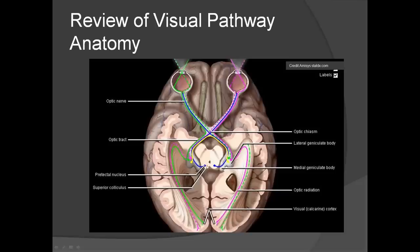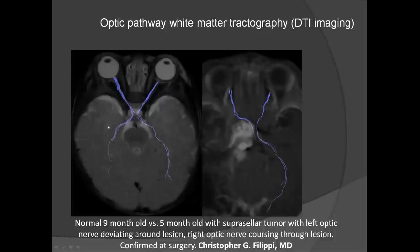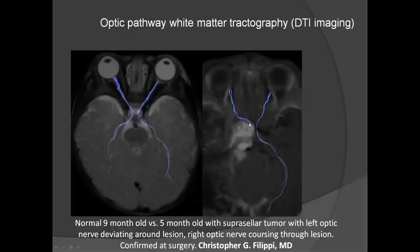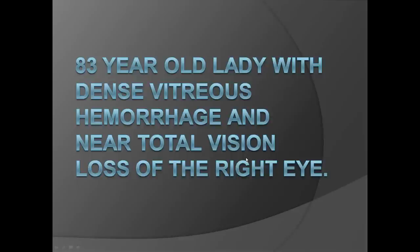This is an MRI of a nine-month-old baby using a special technique called tractography, which images the white matter tracts from the optic nerve back to the occipital lobe. Here is the decussation at the optic chiasm. This patient has a tumor that has displaced the nerve and the tract traverses through the middle of the tumor.